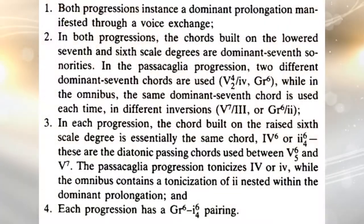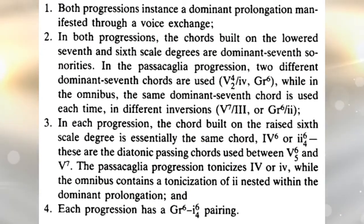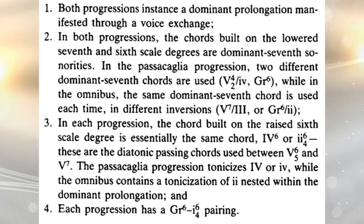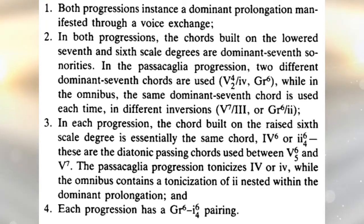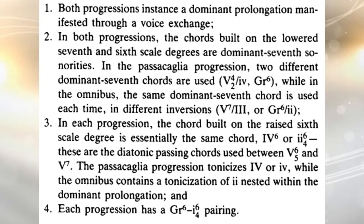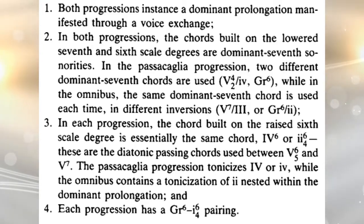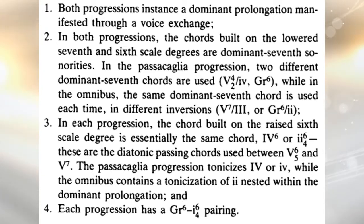Telesco then compares a traditional passacaglia realization with an omnibus progression so we can plainly see how this was evolving. Both progressions are using a dominant prolongation manifested through this voice exchange. The chords built on the lowered seventh and sixth scale degrees are the dominant seventh sonorities. In the passacaglia, two different dominant sevenths are used: the V4/2 of IV and the German augmented sixth. While in the omnibus, the same dominant seventh chord is used each time in different inversions — so we get that German of two again.